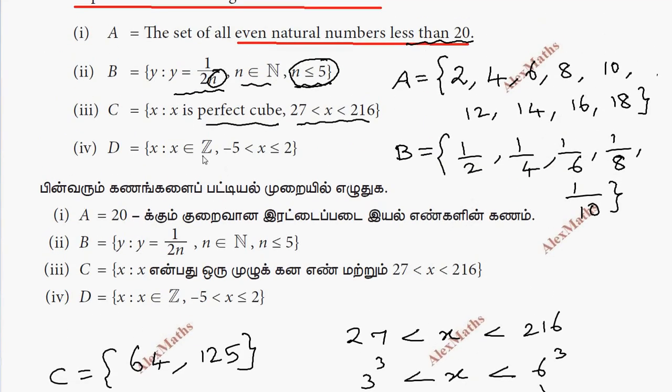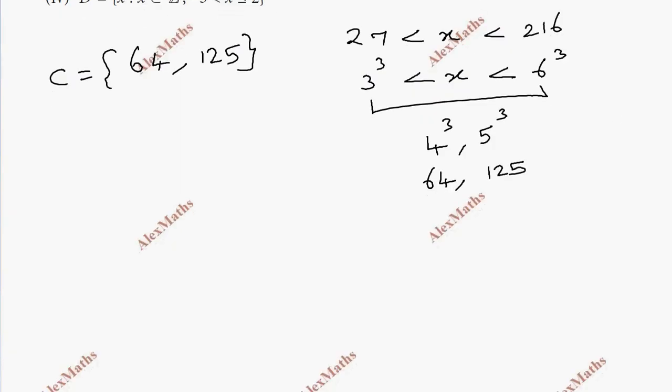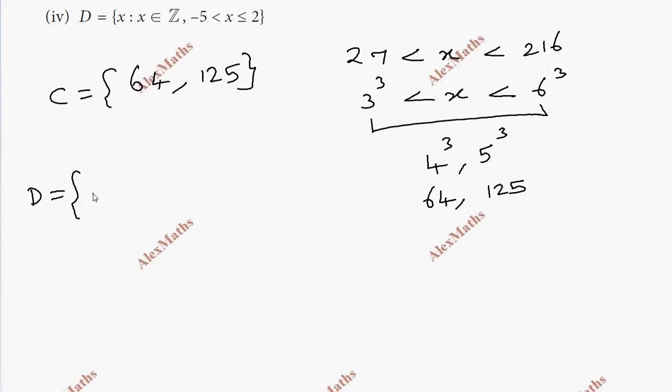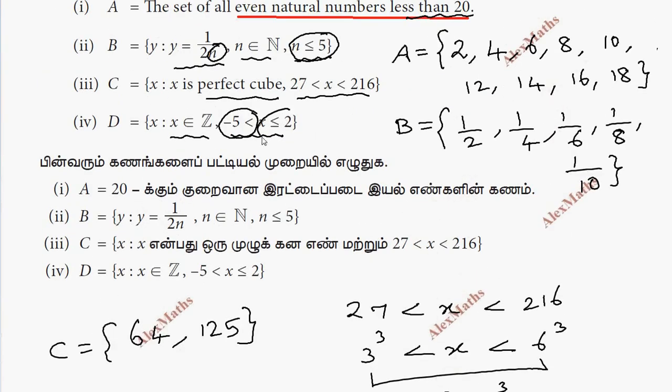Set D: integers where minus 5 less than x less than or equal to 2. The answer is: minus 4, minus 3, minus 2, minus 1, 0, 1, 2.